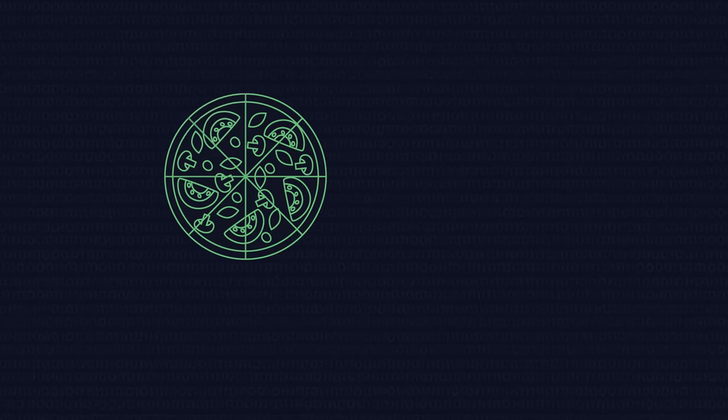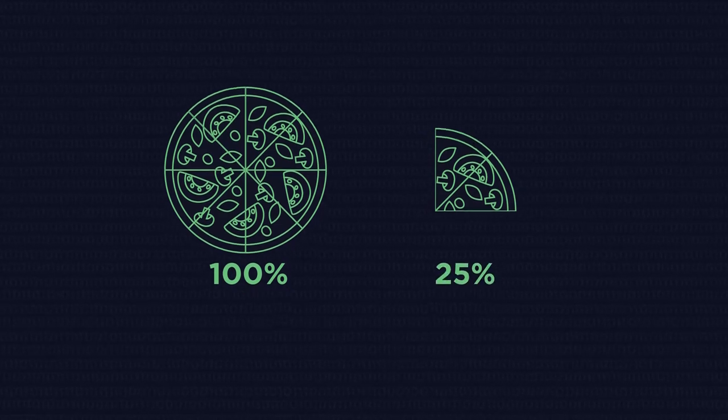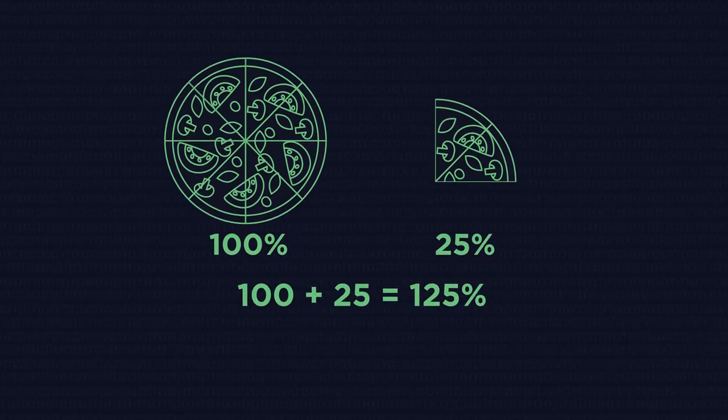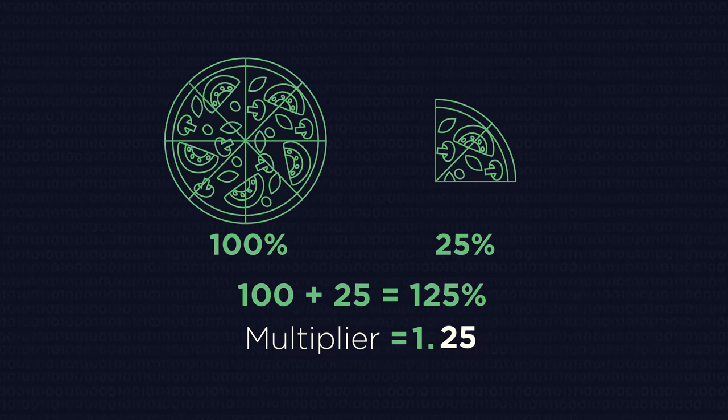But what are multipliers? Why are they 1 point something? Well, we start with 100 percent of the item, and then if we want to increase it by 25 percent, we have the starting 100 percent plus the increased 25 percent. So now we have 125 percent, which written as a decimal is 1.25. The 1 represents our starting amount and the 0.25 represents the percentage increase.